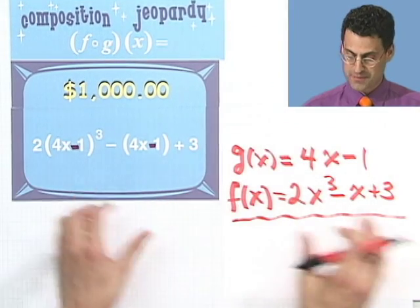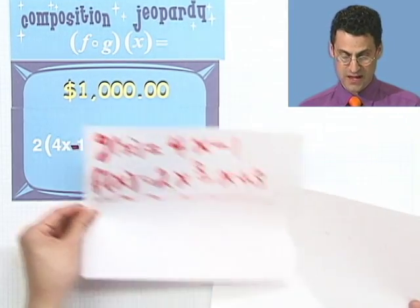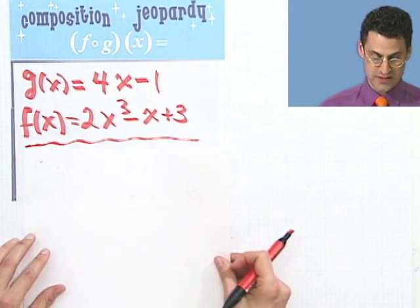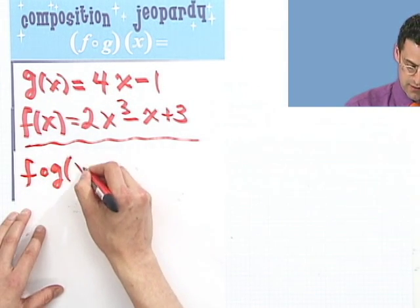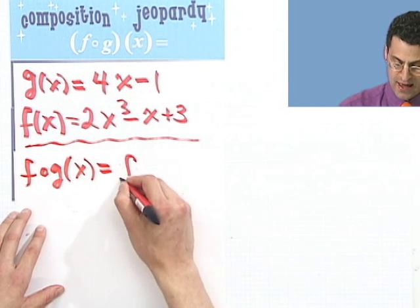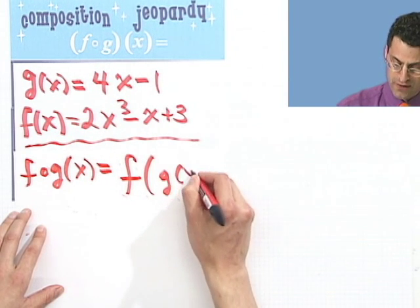Let's just figure out the composition. If we figure out the composition, what would we see? What we'd see is f composed with g of x equals f of g of x.